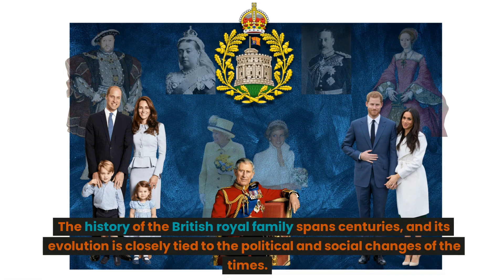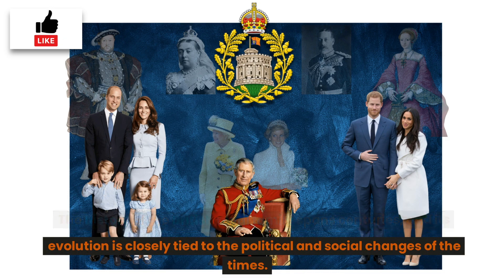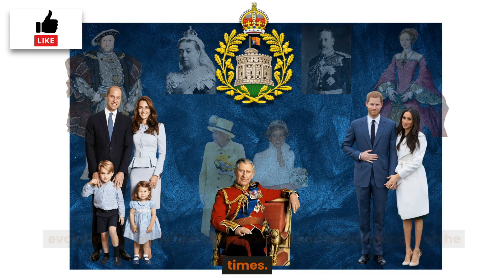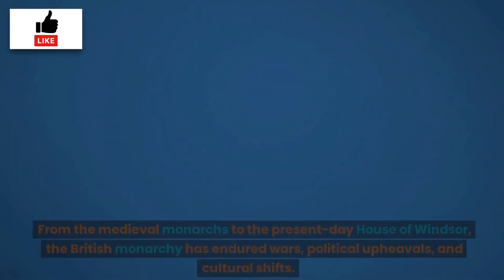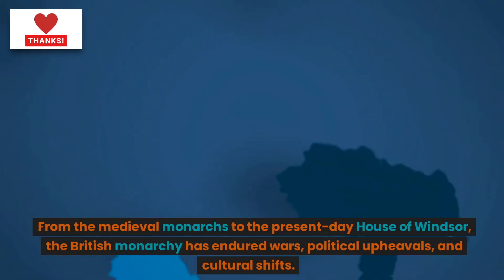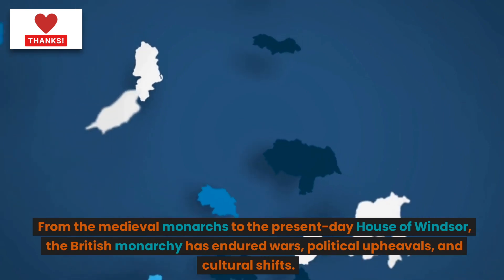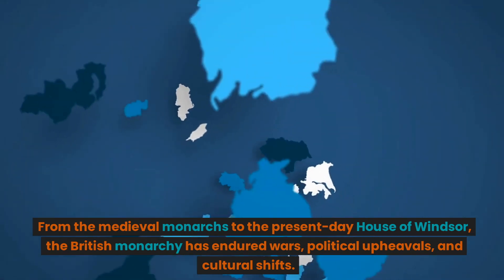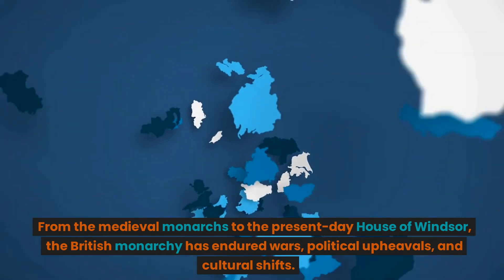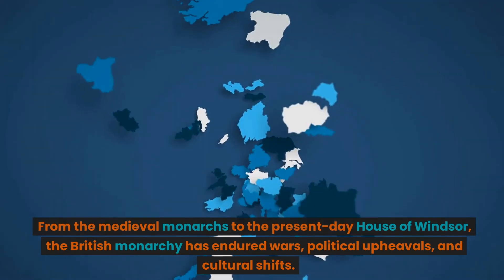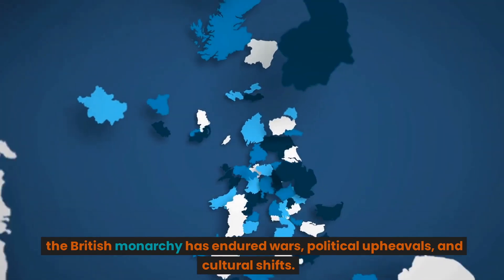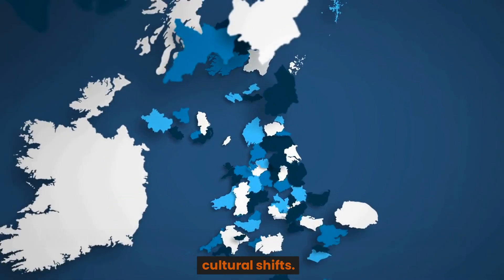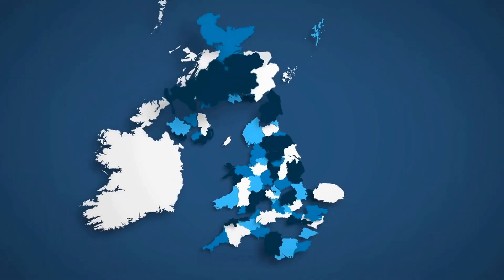The history of the British royal family spans centuries, and its evolution is closely tied to the political and social changes of the times. From the medieval monarchs to the present-day House of Windsor, the British monarchy has endured wars, political upheavals, and cultural shifts.